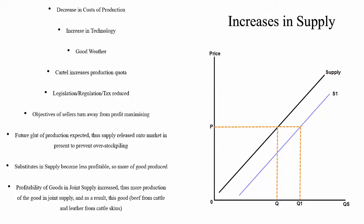We will analyze joint supply in a separate video and it will make more sense when demand and supply are put together on the same graph. But for now, if a good in joint supply becomes more profitable, there will be an increase in the byproduct of that production and the supply curve will shift to the right.